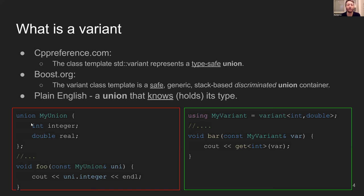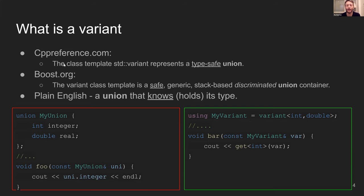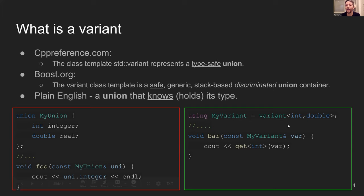In C, we could have a union of an integer and a double. A function can take the union and reference the integer, but it might be a mistake — it might be undefined behavior. In C++, we can do the same with a variant of an int or a double, but the function uses `get`, which will actually check that the type is currently an int and otherwise throw an exception. That's basically what a variant is.